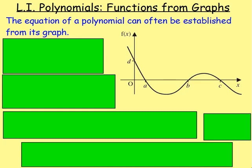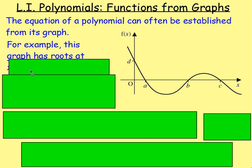Sometimes, if we are very, very lucky, we will be given a graph just like this. What we will have to do is work backwards and come up with the polynomial — get the equation of that graph. To do that, you want to look at where it's crossing the x-axis: here at a, here at b, and here at c. So you can say it has roots at a, b, and c.